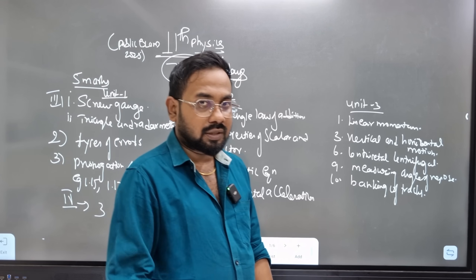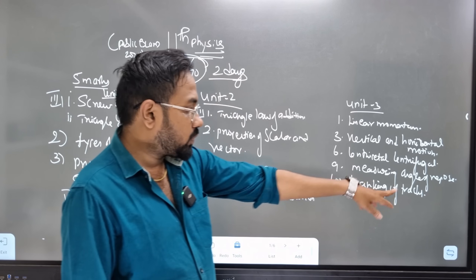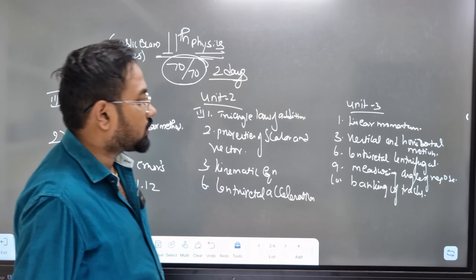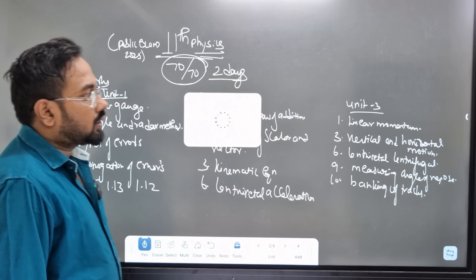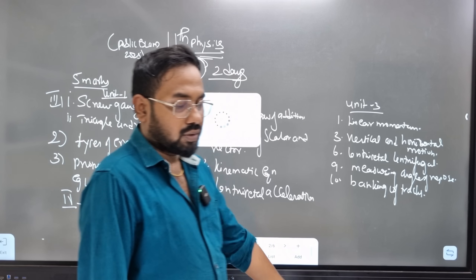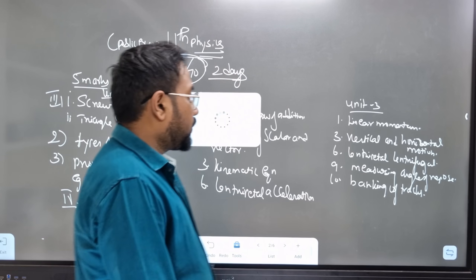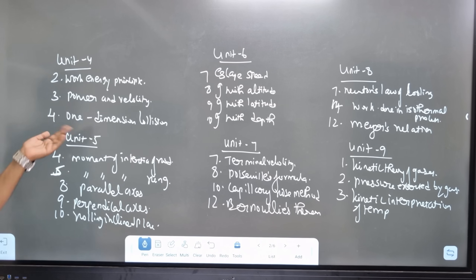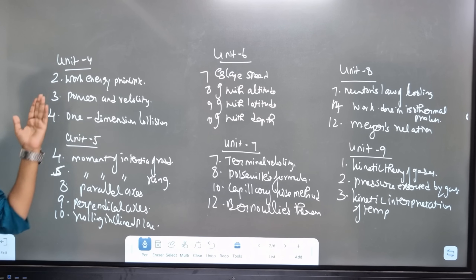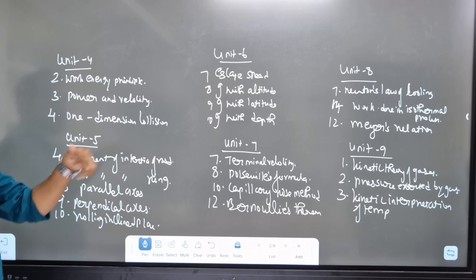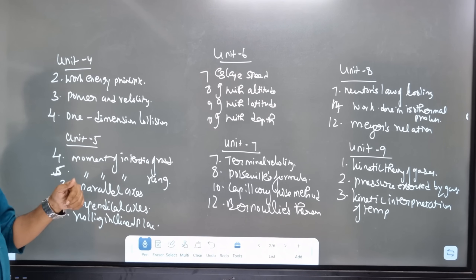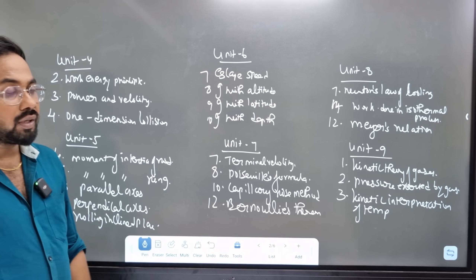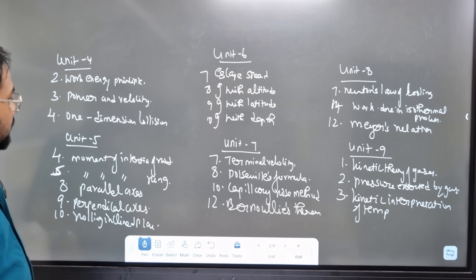The angle of repose is very important — angle of repose equals angle of friction. The repose concept is a key point in the ranking of tracks. That is the tenth question. Unit 4 is very important. The work-energy principle and the power-velocity relation are key 5-mark topics. In one-dimensional collision, study the cases carefully.